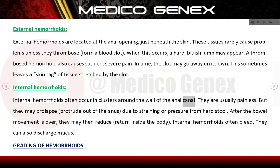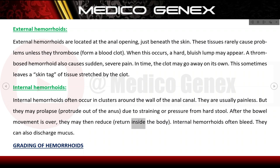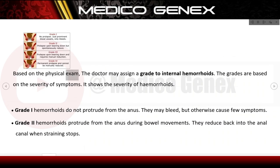Internal haemorrhoids often occur in clusters around the wall of the anal canal. They are usually painless, but they may prolapse — protrude out of the anus — due to straining or pressure from hard stool. After the bowel movement is over, they may then reduce back inside the body. Internal haemorrhoids often bleed and can also discharge mucus.